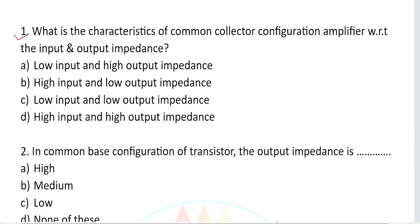The options are: (a) low input and high output impedance, (b) high input and low output impedance, (c) low input and low output impedance, and (d) high input and high output impedance.